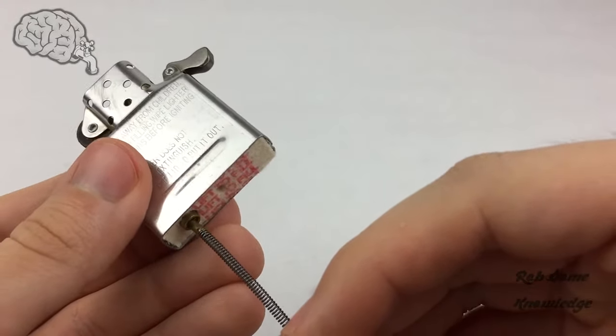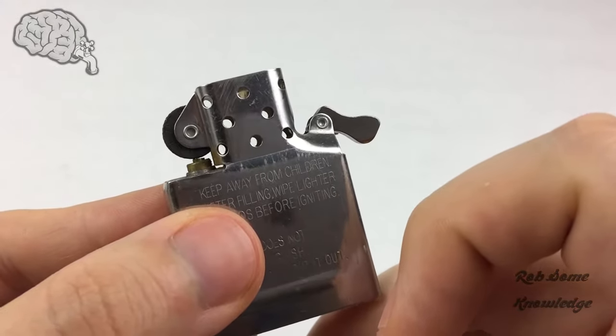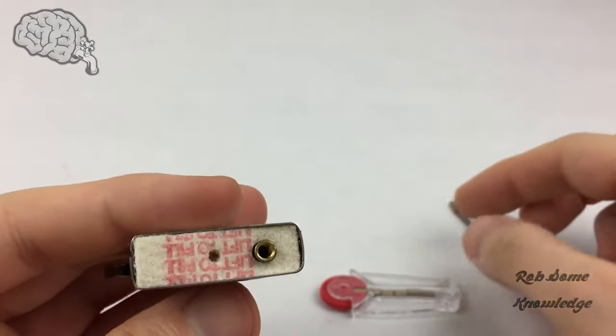If you have any leftover little fragments of flint in there, just give it a few taps on the table to get that out. You can tell if there's any in there because you can see right underneath the lighter wheel—if there's flint in there it'll look like something sticking out. That's all cleared out, so on to the next step.